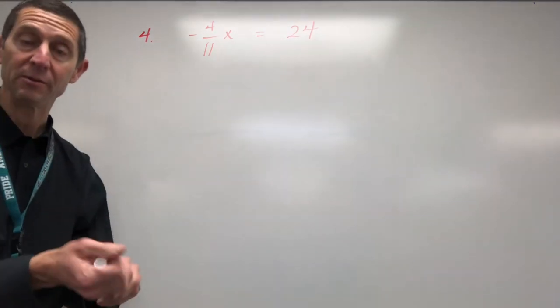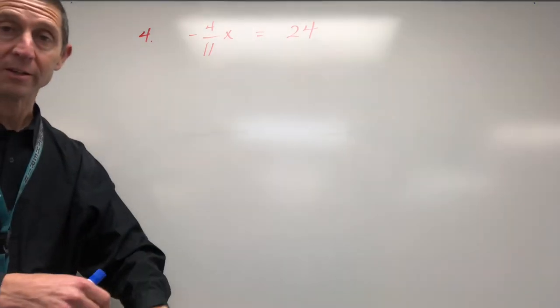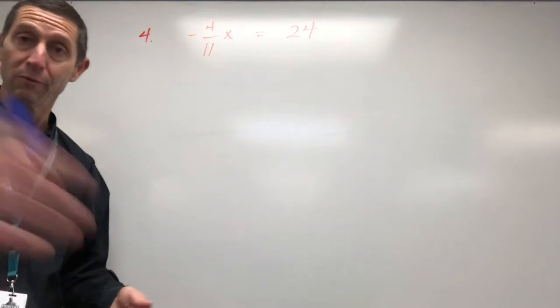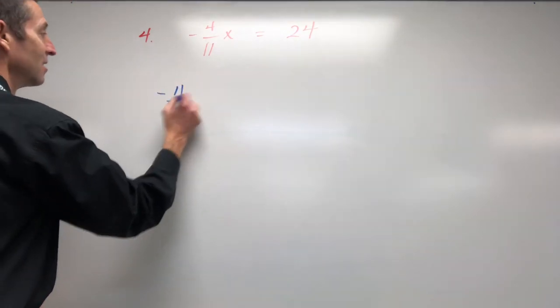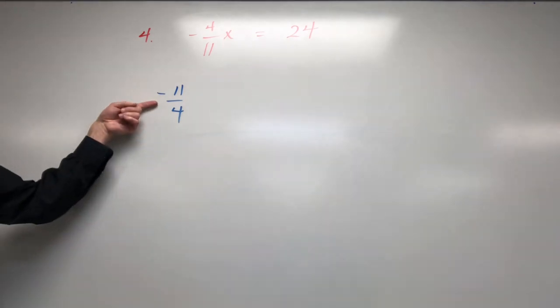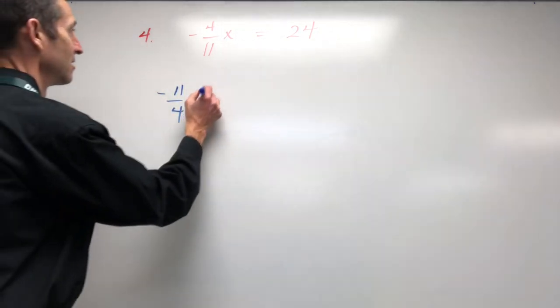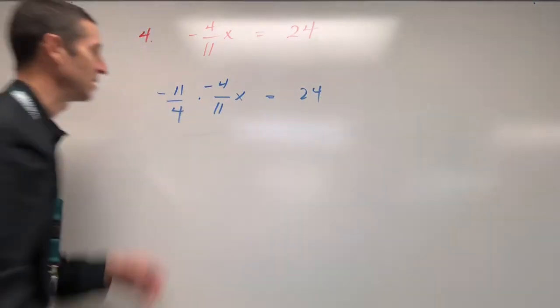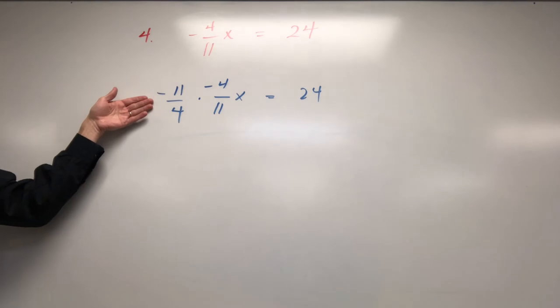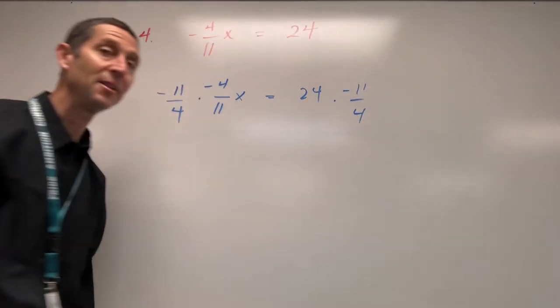So for us to get rid of it, we're going to hit it by the reciprocal. So instead of 4 over 11, we're going to make it 11 over 4. Let's keep that negative sign in too. Watch this. So I'm going to take the reciprocal with the negative sign and I'm going to hit it on both sides. So again, negative 11 over 4 on one side means you've got to multiply negative 11 over 4 on the other side.